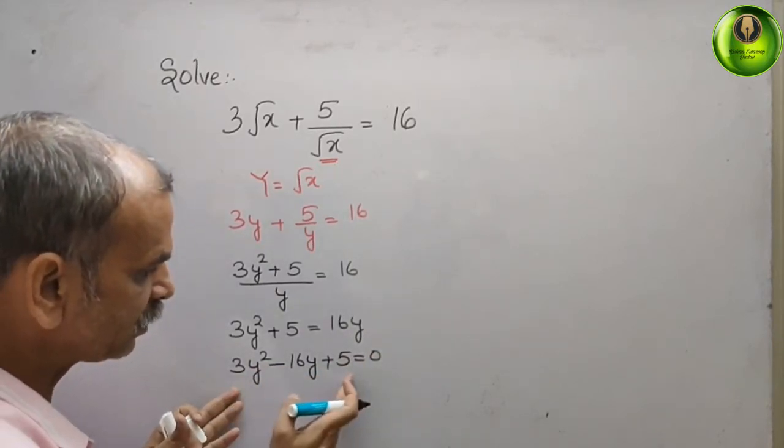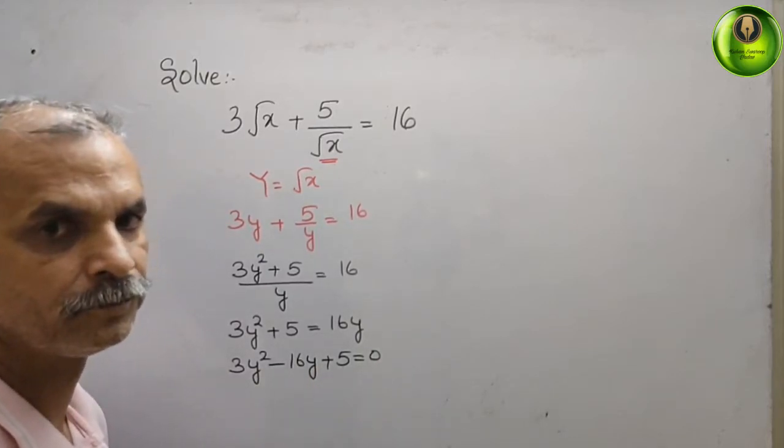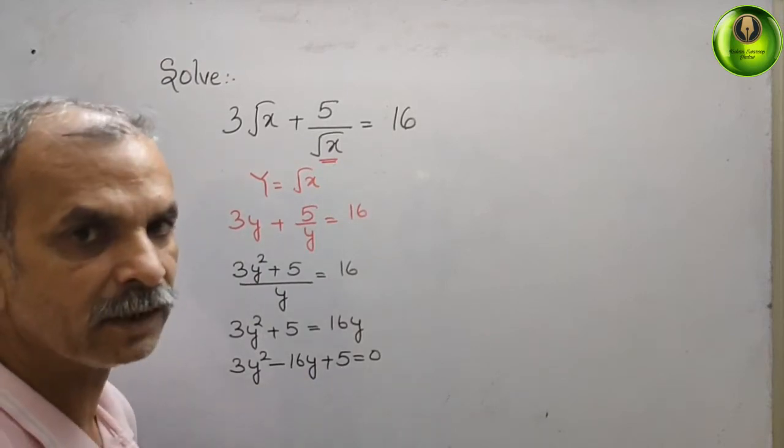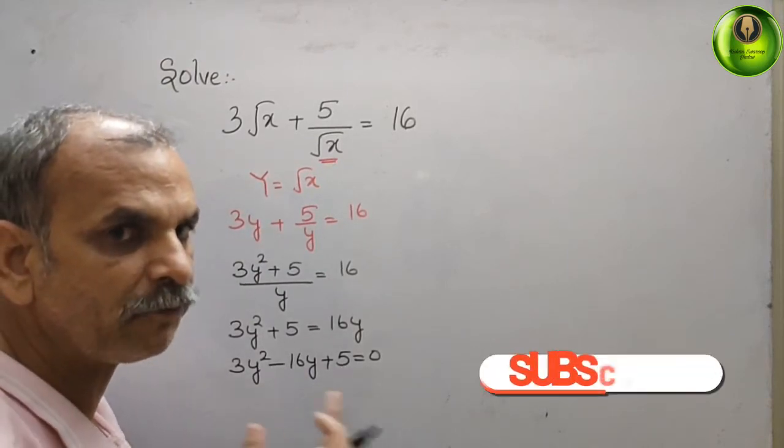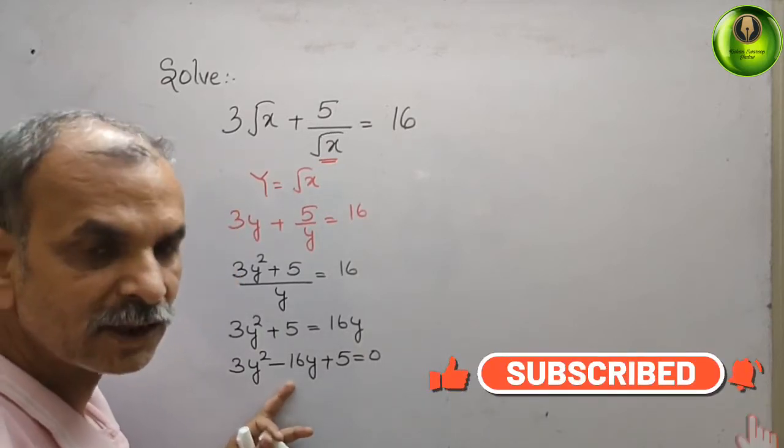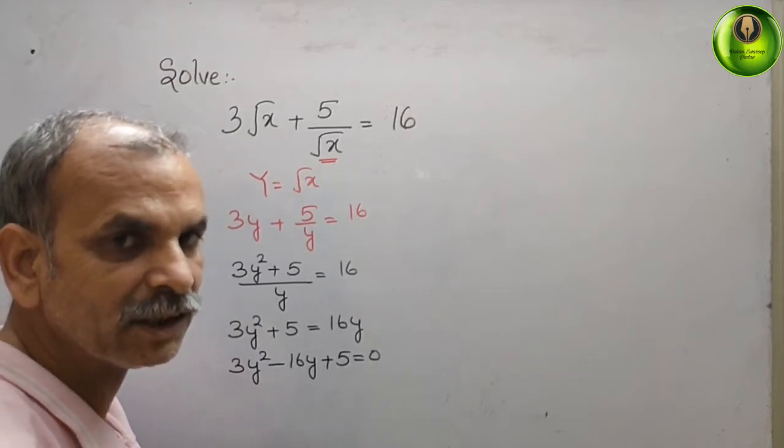Now you can see this, by seeing this we can go for a middle term splitting. So that is your 3 into 5 is 15. And we also know that 15 into 1 is 16 also. Minus 15 minus 1 is 16.